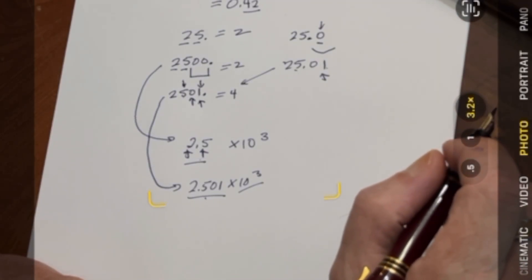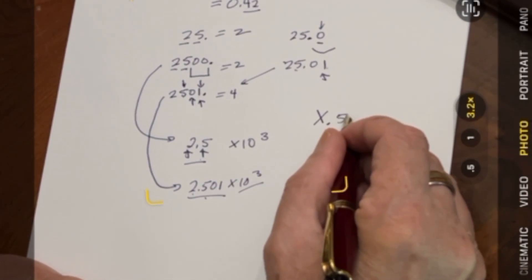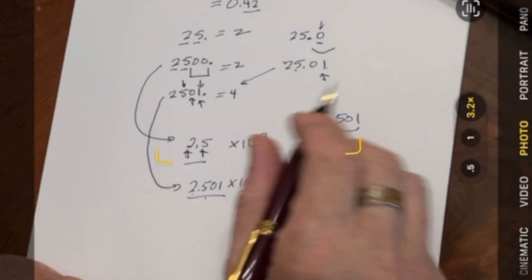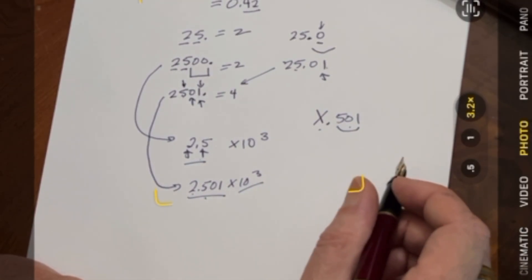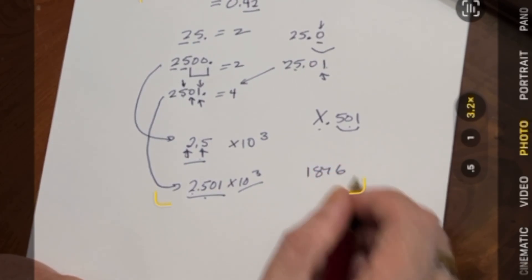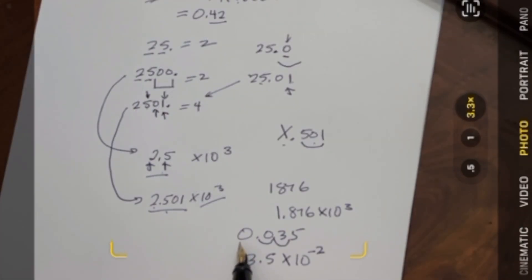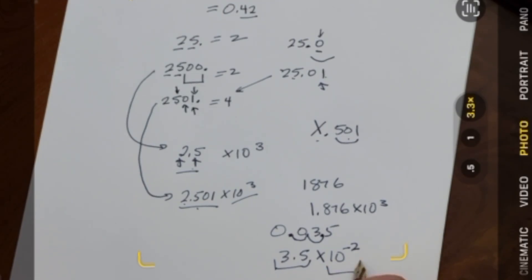When you report out significant digits in scientific notation, you have two types of numbers: the character — in this case the 5 — and something called the mantissa, which is the numbers to the right of the decimal place. No matter what the number is, you always want to report out a character and then a mantissa if necessary, and this works both above and below zero. For example, 1876 would be reported as 1.876 times 10 to the 3rd. With 0.035, you move the decimal two places to the right to get 3.5, so it's 3.5 times 10 to the negative 2 — giving you two significant digits and clearly showing the magnitude.